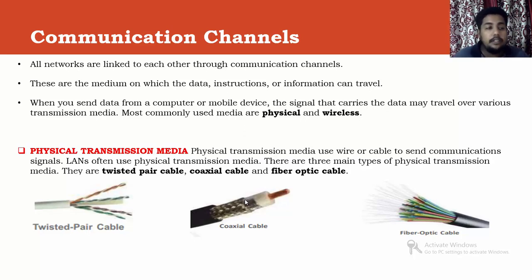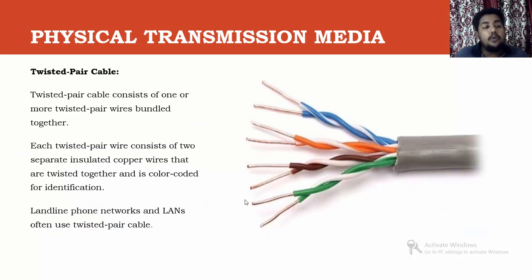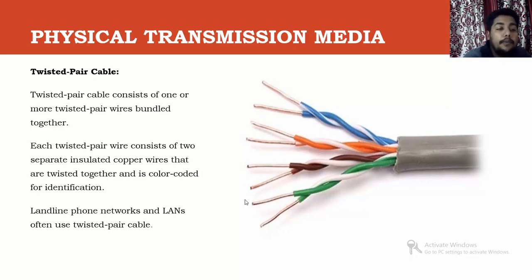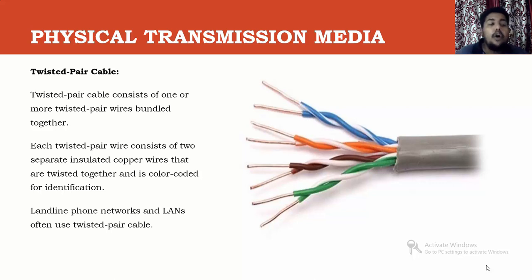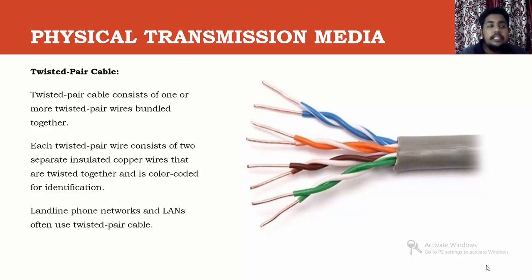The first is twisted pair cable, which consists of one or more twisted pairs of wire bundled together. Each twisted pair consists of two separated insulated copper wires. The copper is coated with rubber or plastic so that signals are not lost, since data travels in the form of signals and coating prevents signal leakage. Each pair has a different color code — for example, blue, orange, and so on. This type of cable is basically used in phone networks, telephone lines, and internet router cables.